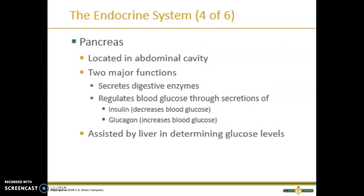The pancreas is located in the abdominal cavity and has two major functions. First, it secretes digestive enzymes into the small intestines. Second, it regulates blood glucose by secreting insulin to lower blood sugar and glucagon to increase blood sugar. In patients with cystic fibrosis, the ducts in the pancreas become blocked with thick mucus, making them unable to secrete digestive enzymes, so they must take replacement enzymes for the rest of their lives with every bit of food they ingest.